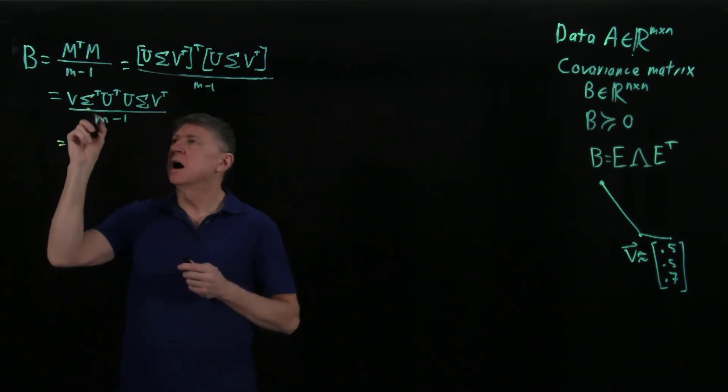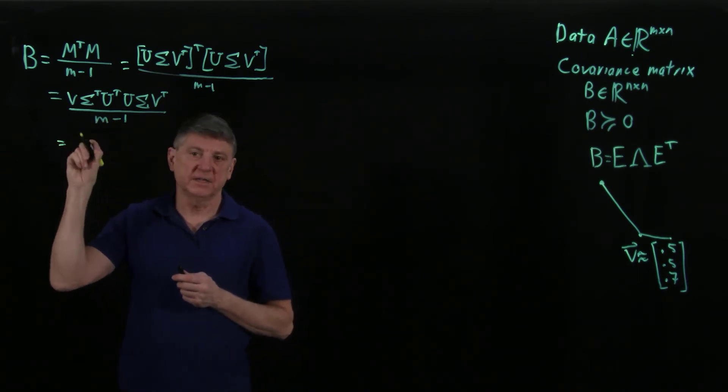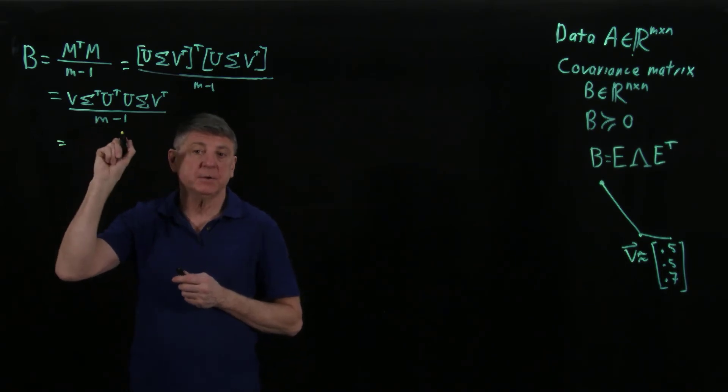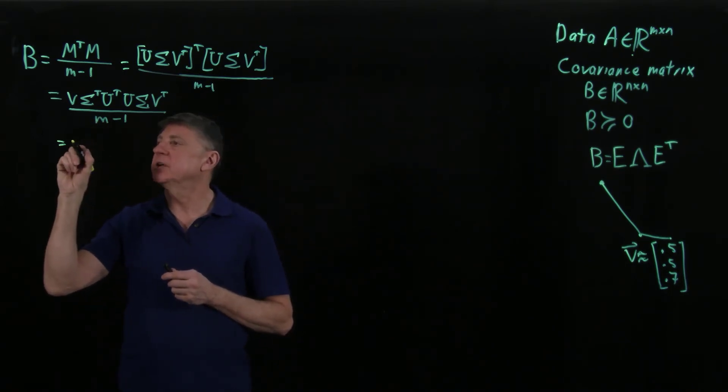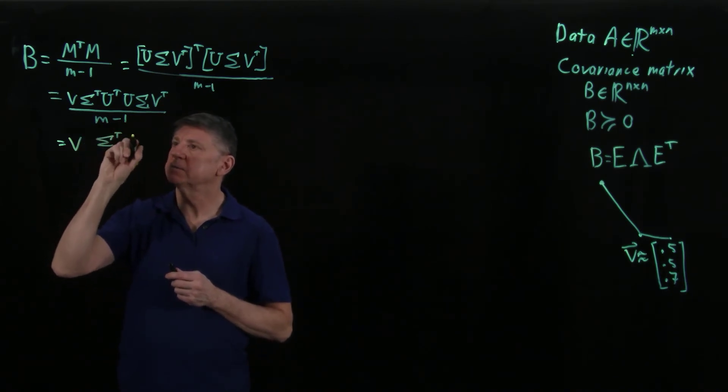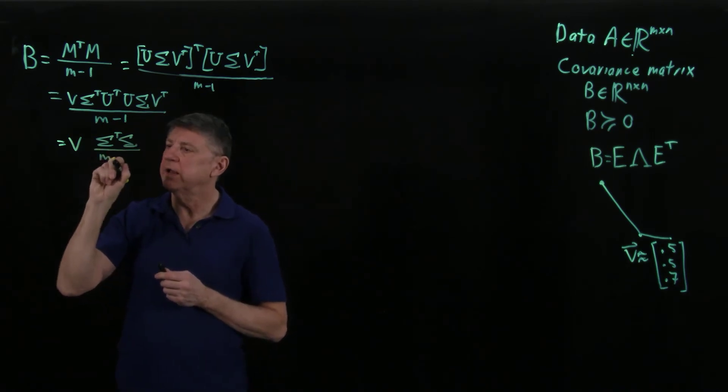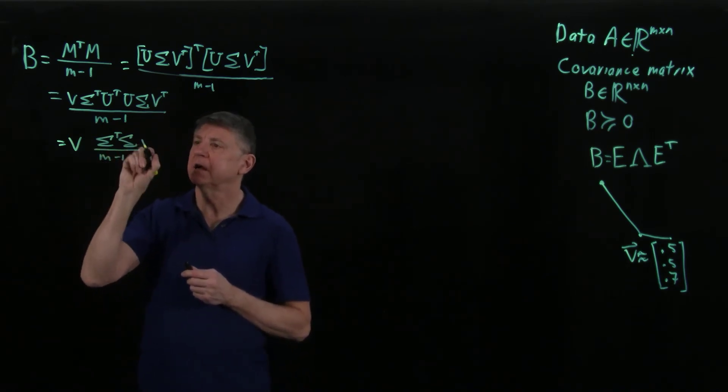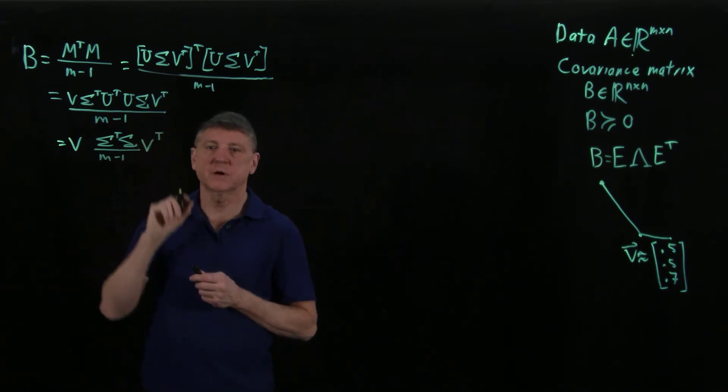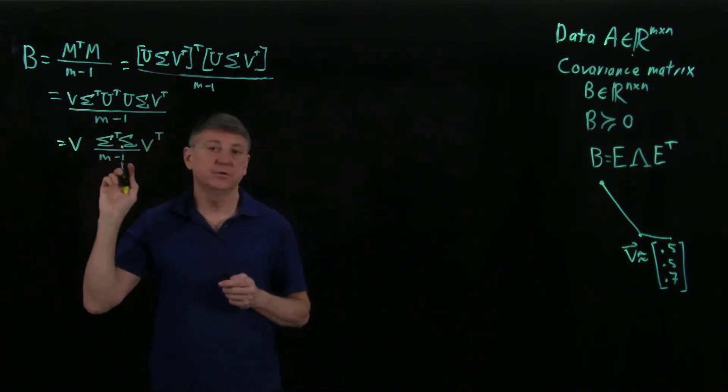Let me take this. So I could put this 1 over m minus 1 on the outside. Instead I'll keep it on the inside, and I could say that that equals v times sigma transpose sigma over m minus 1 times v transpose. And now I can do some matching.